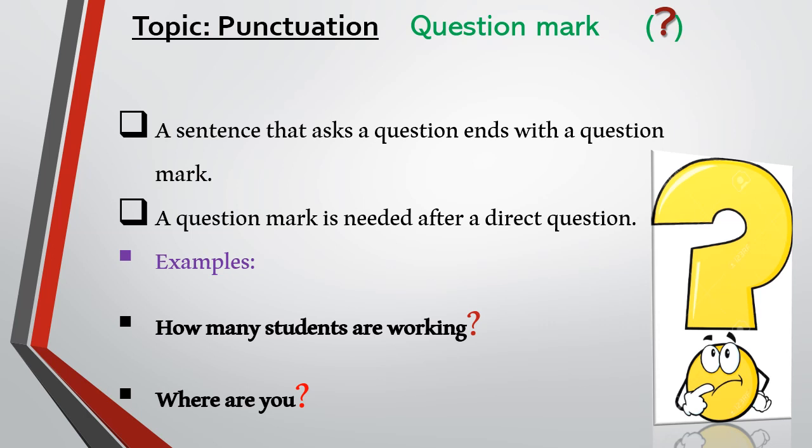The next punctuation is the question mark. A sentence that asks a question ends with a question mark. A question mark is needed after a direct question. For example: 'How many students are working?' — question mark. 'Where are you?' — question mark.